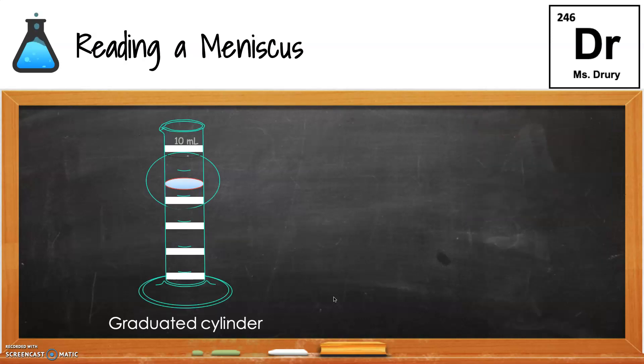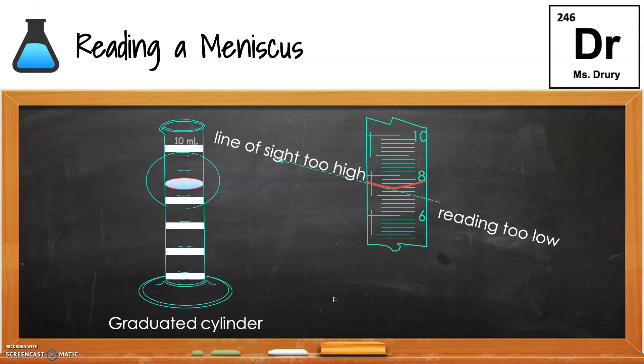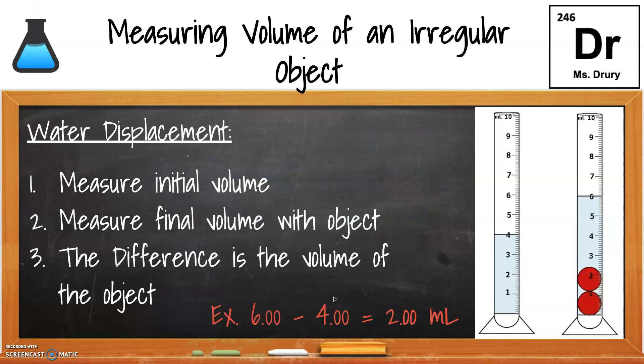Putting that together, when we read the meniscus, you want to read the lowest point, and you want to read it from a good angle. You don't want to read up to the top because then you're reading the actual top of the meniscus, or read too low, reading from high, you'll be the bottom of the meniscus. You want to read straight at the meniscus, so the reading is correct if you're at the proper line of sight, so get down low to see the meniscus.